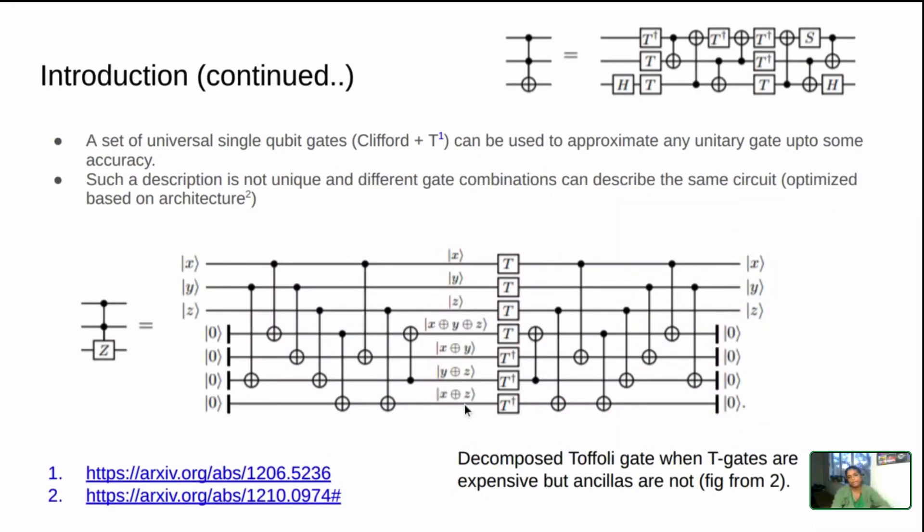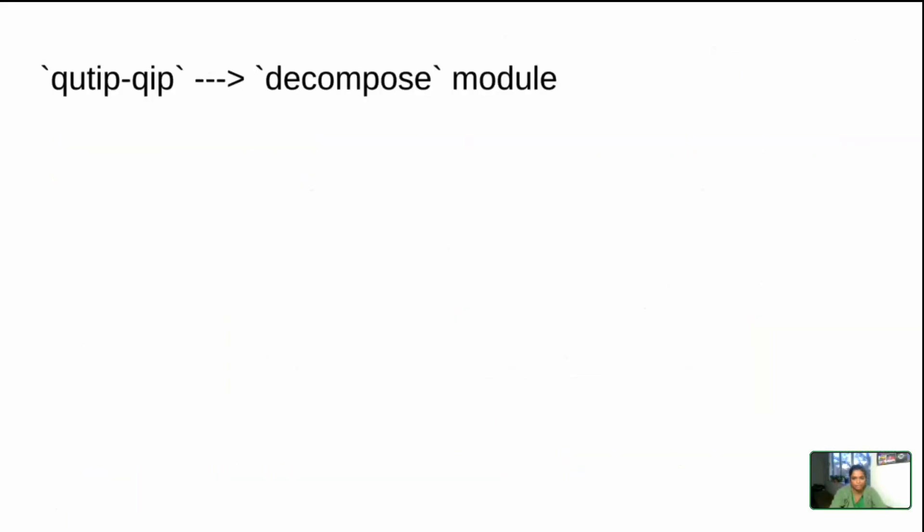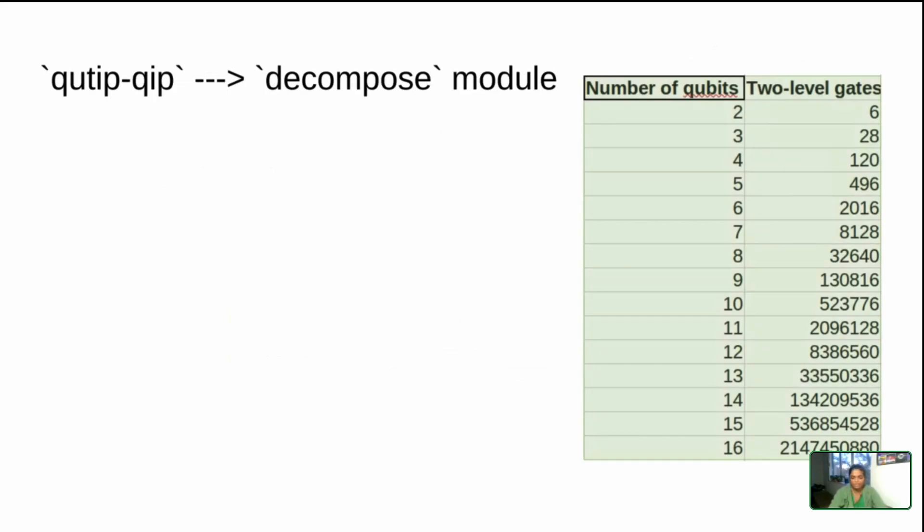In that case, there's a scheme available that can decompose your Toffoli using ancillas but with just one layer of the T gates instead of these three layers themselves. I wanted to be able to do that, and that's the end goal of this Q-tip decomposition module, but we'll talk about the issues I faced about this towards the end. That's basically bad planning on my part.